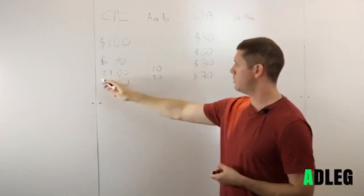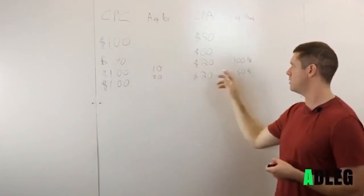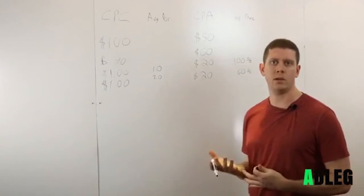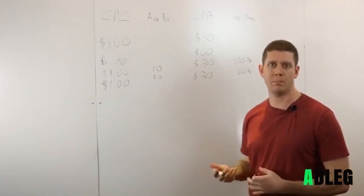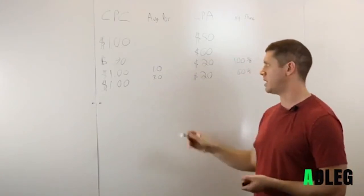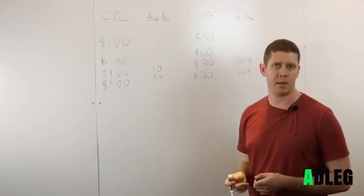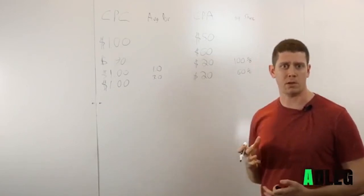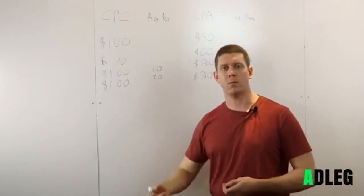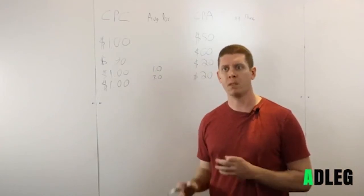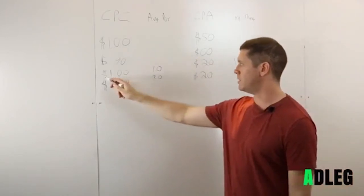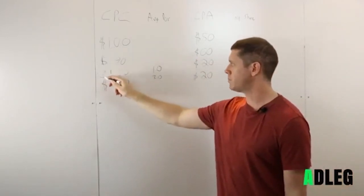So for this example right here, the one average position, 100% impression share, there's nothing we can do with the bid to get more traffic from that keyword. We're getting as much as possible, so there's no reason to change that bid. Obviously you can adjust your ads, try to increase your click-through rate to get more traffic from a keyword like that. But from the perspective of changing the bid, there's nothing that we can do. So this is already the optimal bid.